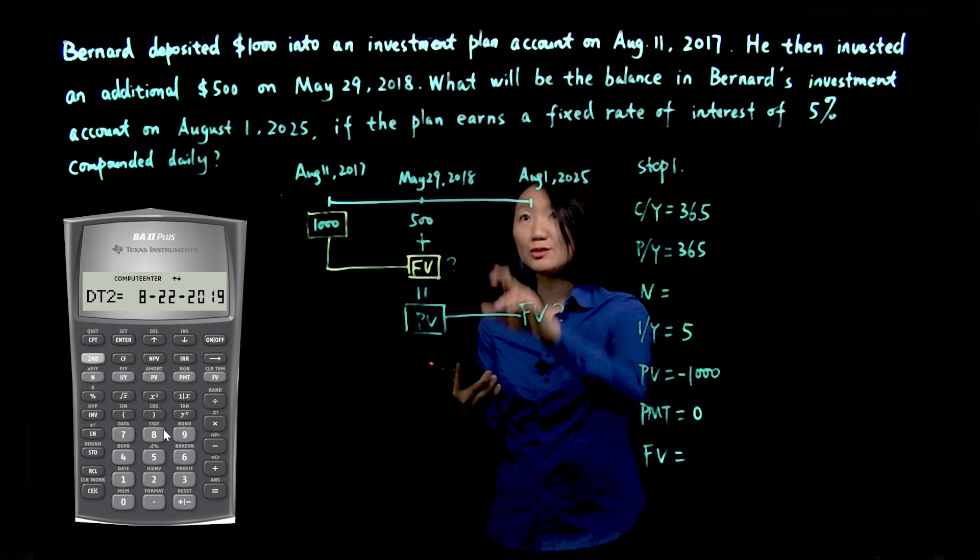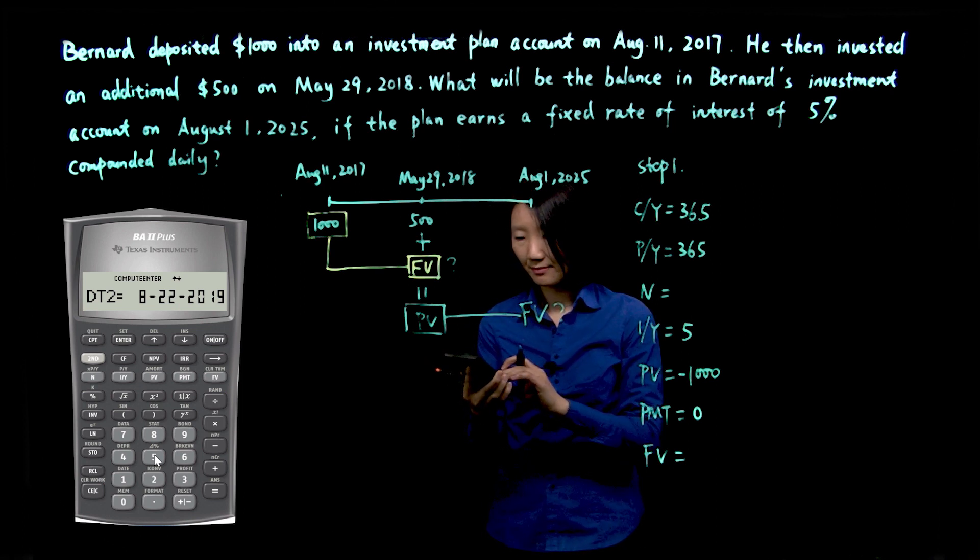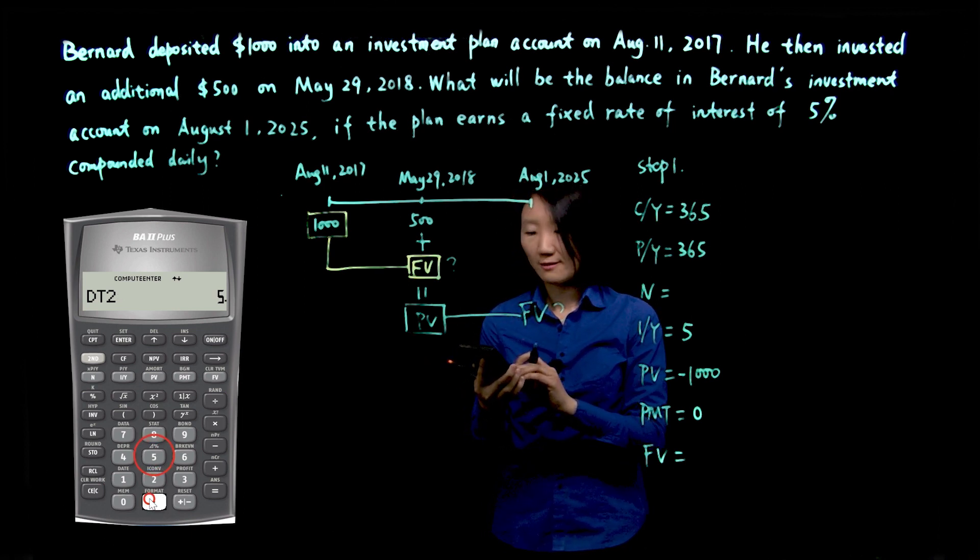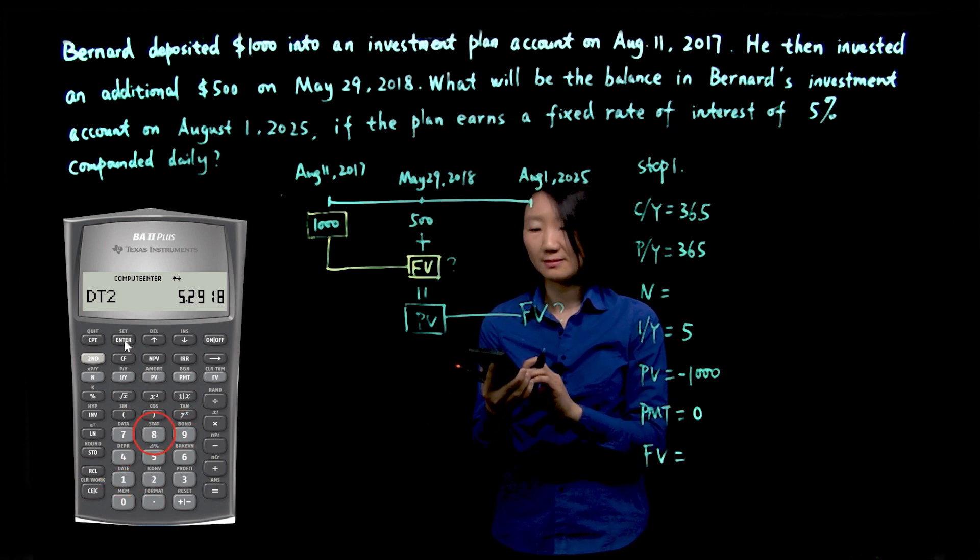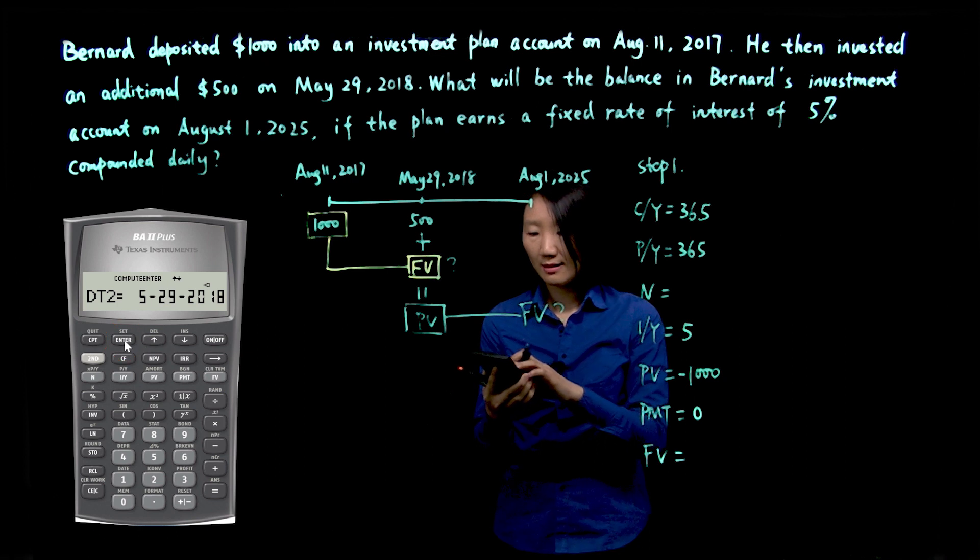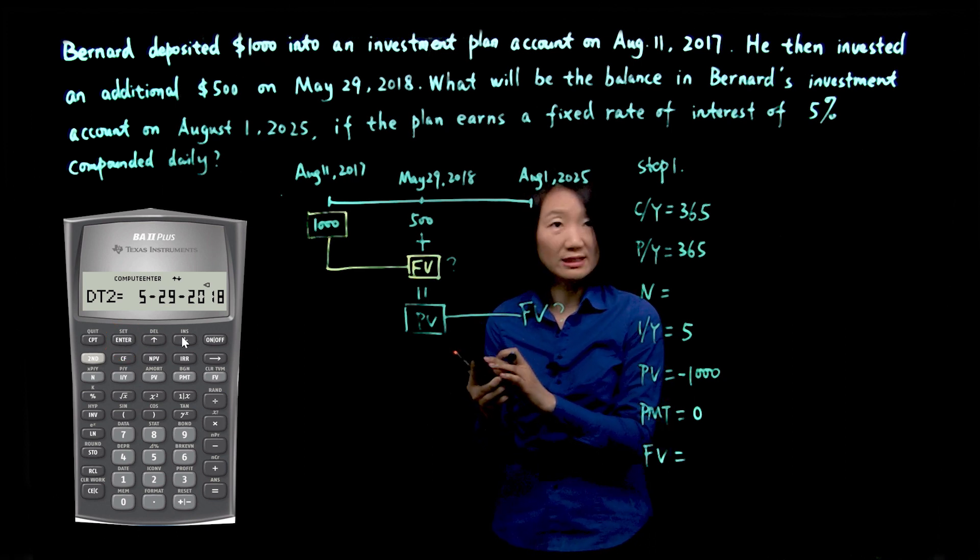Scroll down. You'll see the second date. It's 5.29 for May 29th, .18. Enter. You'll see May 29, 2018.